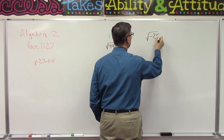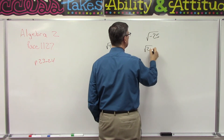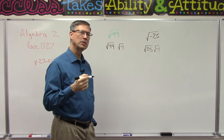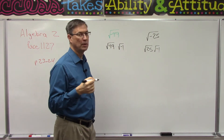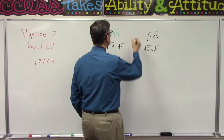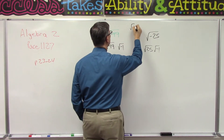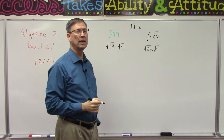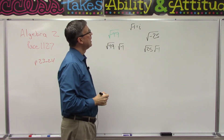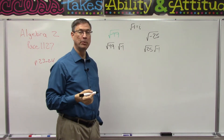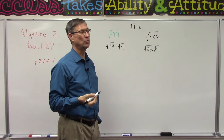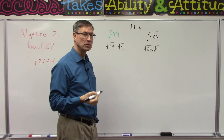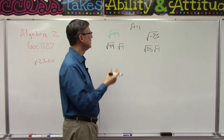Let's call this the square root of 49 times the square root of negative 1. Even if I saw the square root of 25, I could separate it out the same way. But let's go a step further — instead of always writing the square root of negative 1, let's say that the square root of negative 1 is the letter i. It's usually an italics i, and it stands for imaginary number, because there is no real number that is the square root of negative 1.